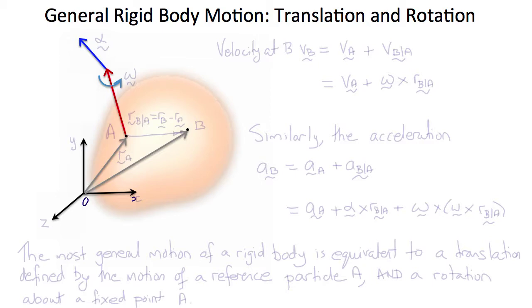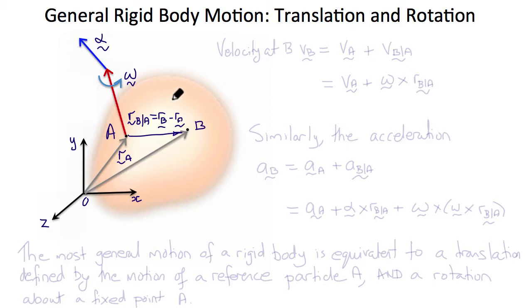So far we've considered rigid body rotations. Now let's consider a general rigid body motion, which consists of a translation and a rotation. Point A with position vector r_A has angular velocity omega and angular acceleration alpha. Point B has position relative to A of r_B/A, which is r_B minus r_A. So the velocity at point B, v_B, equals v_A plus the velocity of B relative to A, which equals v_A plus omega cross r_B/A.